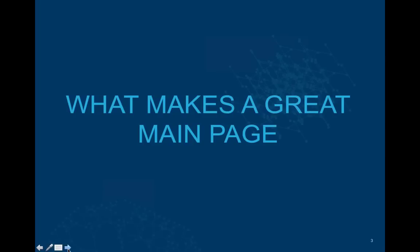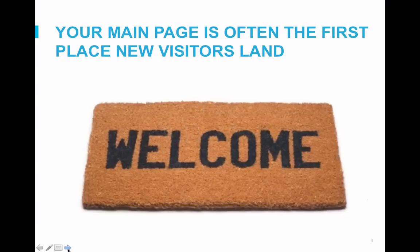Let's start out by talking about what makes a great main page, what to include, and what you might want to avoid. The main page is like a welcome mat for your wiki — it's the primary landing page for many of your visitors. First impressions can be important and help to turn someone from a visitor to your wiki into an editor on your wiki.